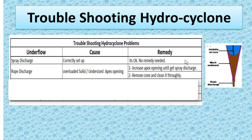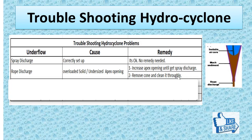Rope discharge: what can be the cause? Overloaded solid or undersized apex opening. The remedy: increase the apex opening until you get spray discharge. Second, remove the cone and clean it thoroughly, in case it is overloaded or solid has accumulated inside the cone.